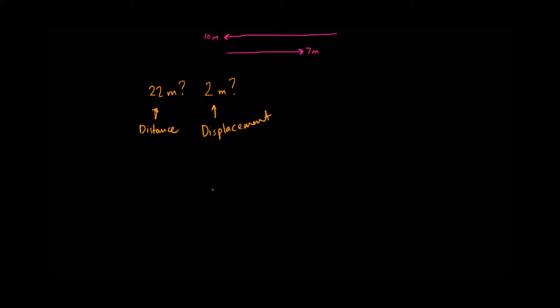So, another example would be if this is our start point and this is our end point. Let's say I took a path that looks something like this. Now, obviously, this is a really convoluted way to get from the start to the end point.